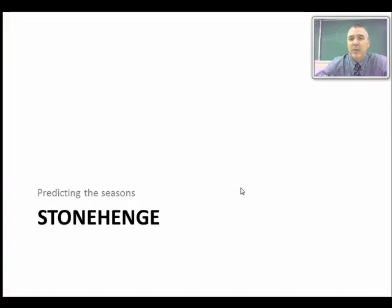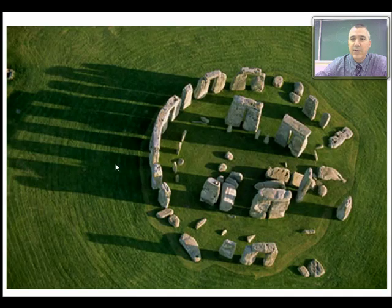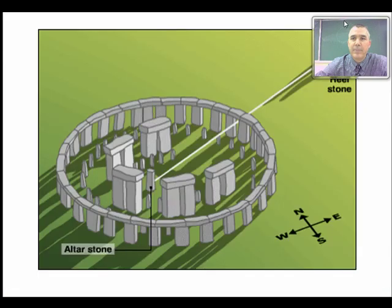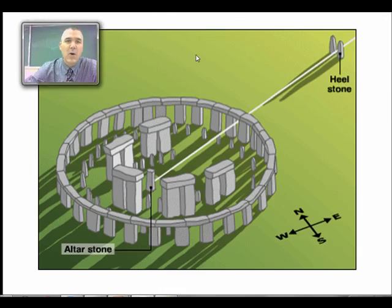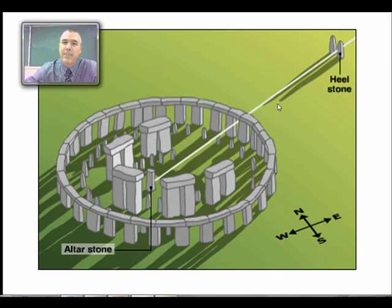Early people used a number of things to predict the seasons, and one of those were structures referred to as henges. This is Stonehenge in England — probably the most famous one — a series of giant monolithic stones arranged so that at certain times of year, on the summer solstice, the longest day of the year, the sun would rise right between two stones and the light would come all the way through and hit the central altar stone. That was a significant event marking the date of the longest day of the year, and there are other points along the structure where other dates could have been marked.